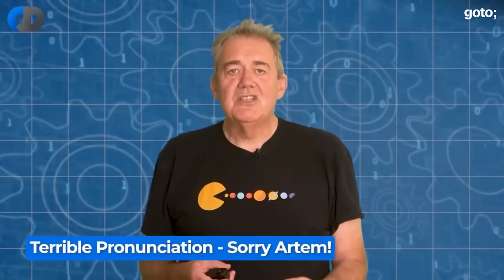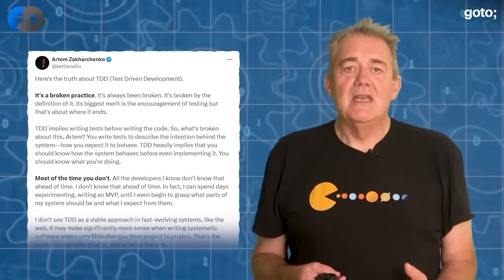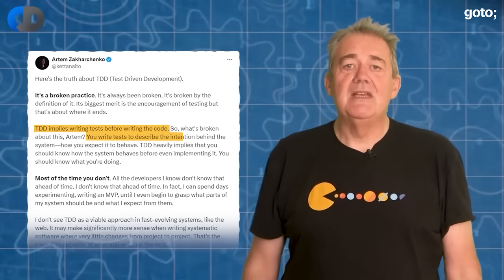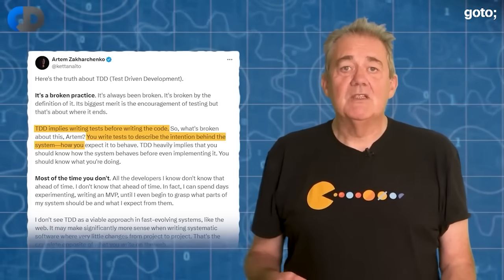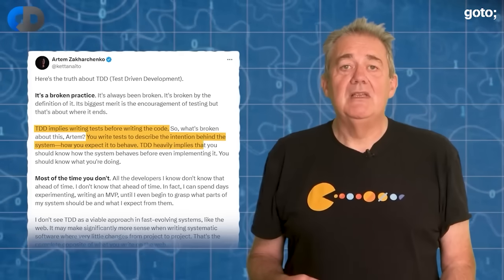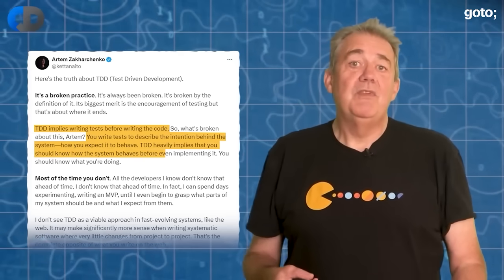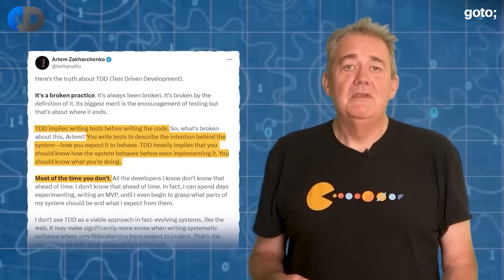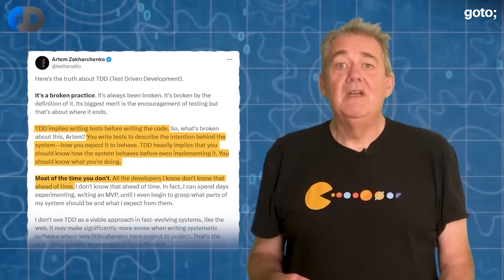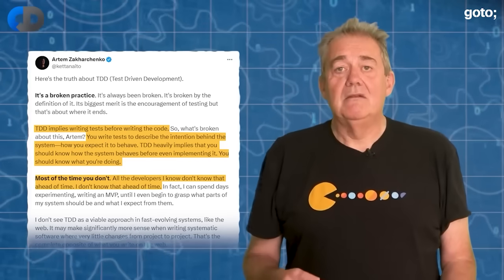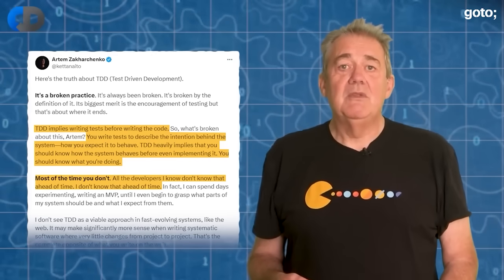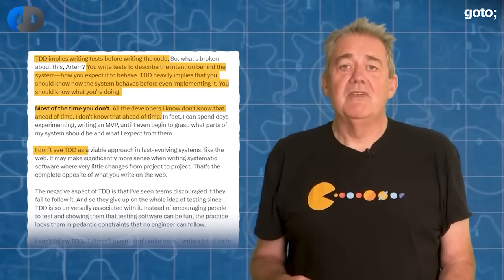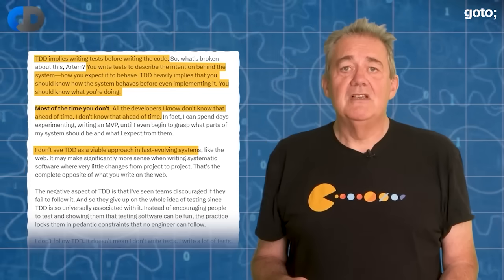The critique that I came across was from Artem Zarchenko. In it he says: test-driven development implies writing tests before writing the code — you write tests to describe the intention behind the system that you want to build, how you expect it to behave. TDD heavily implies that you should know how the system behaves before even implementing it. You should know what you're doing. Most of the time you don't. All the developers that I know don't know that ahead of time. I don't know that ahead of time. He goes on to say he doesn't see test-driven development as a viable approach in fast-evolving systems like the web.